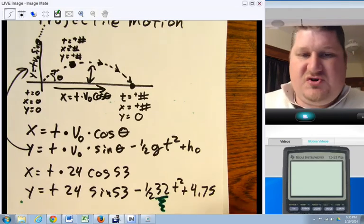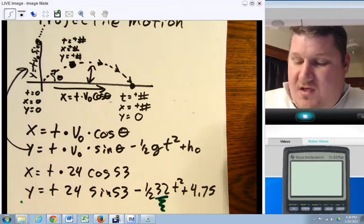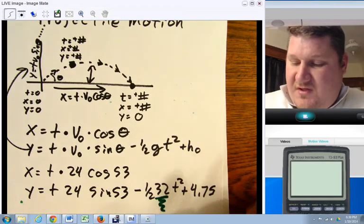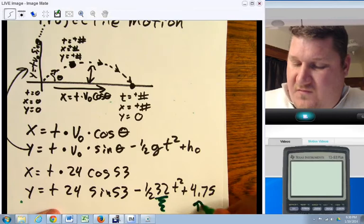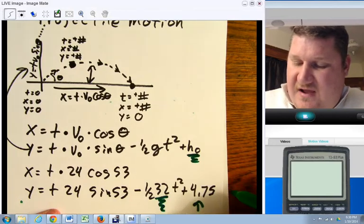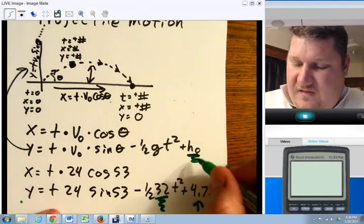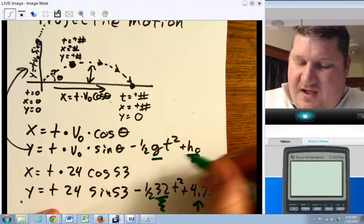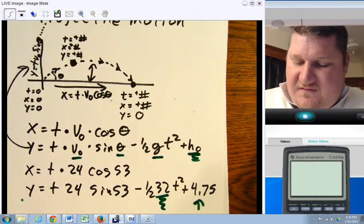Now, the 32 is actually the force of gravity pulling down. In fact, if you're in physics, this should look very, very familiar. This, the 4.75, is the initial height. So, for example, in our case, she let it go at 4.75 feet. So, we have gravity, height, theta, initial velocity. By the time we plug it all in, we get these two equations.